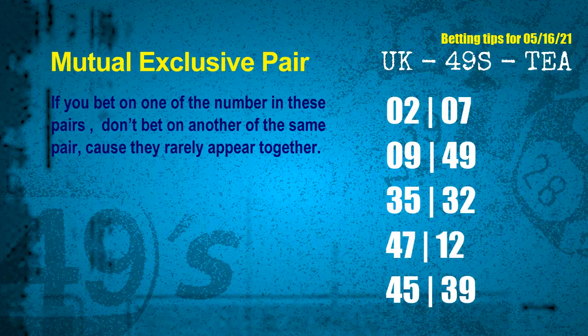Mutual exclusive pairs are numbers that both match the following ones and colors, but according to thousands of results, they rarely appear together — so if you bet on one, don't bet on the other in the same pair. The mutual exclusive pairs for next draw are: first pair 02 and 07, second pair 09 and 49, third pair 35 and 32, fourth pair 47 and 12, fifth pair 45 and 39.